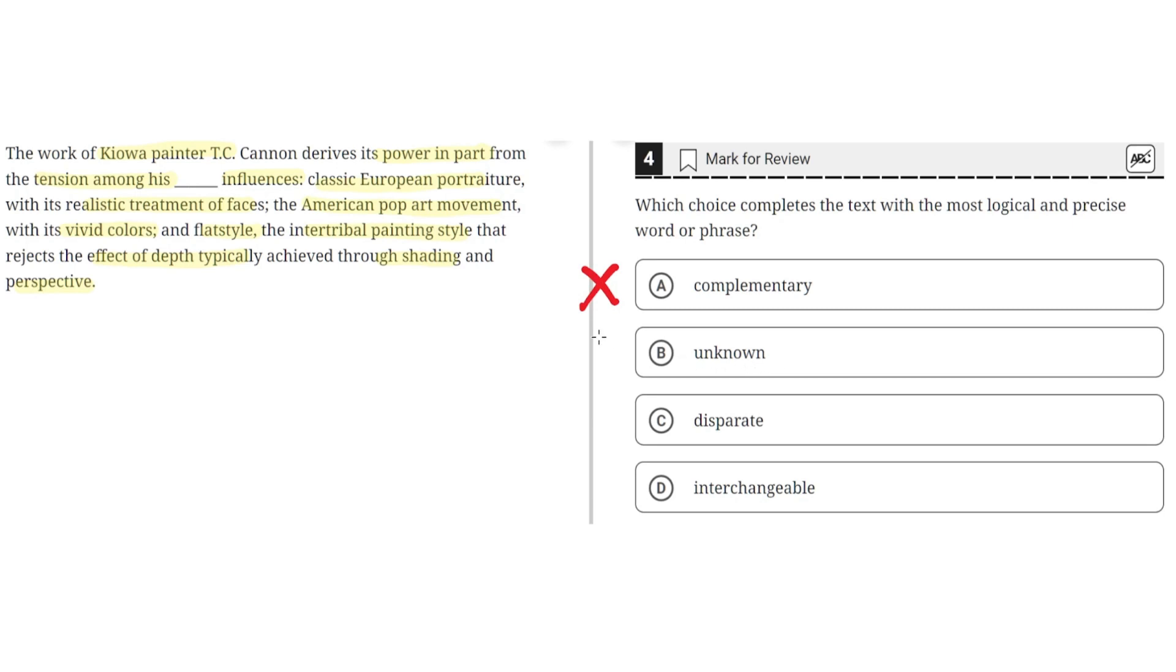B, unknown. This is incorrect because this implies that these influences are all unknown. But the second part of the sentence shows that there are three different influences: classic European portraiture, American pop art movement, and intertribal flat style. So these influences are known. So B is incorrect.